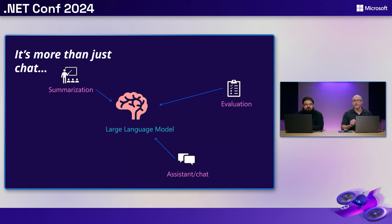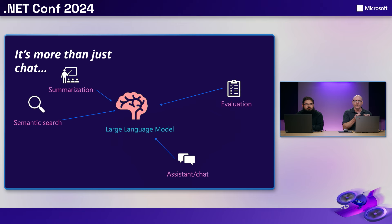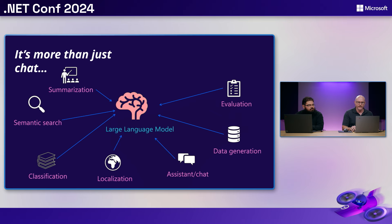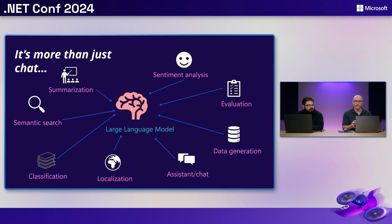It can do evaluation, which Luis will talk about later. Semantic search — if your customer doesn't know exactly what they're searching for, or even if they misspell something, semantic search will find what's closest to what they're trying to type. We've also got classification for automated workflows, data generation for test data, localization for translating between languages, and sentiment analysis — just a few examples of what's possible.